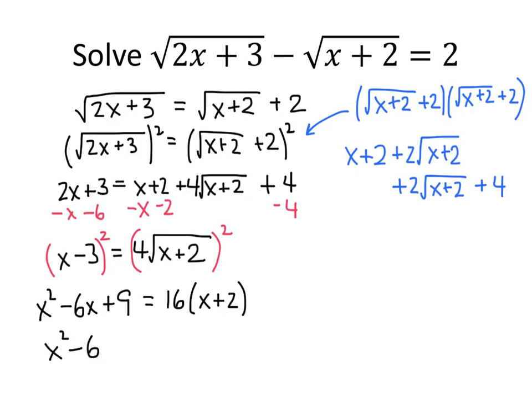So, still going. We don't have any square roots though anymore, so that's good. We're making progress. We end up with x squared minus 6x plus 9 equals 16x plus 32. That looks like a regular quadratic equation, so let's isolate everything onto one side. Subtract 16x from both sides, subtract 32 from both sides. When we do that, what we get is x squared minus 22x, and then 9 minus 32 works out to be minus 23.